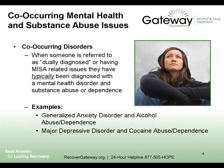Co-occurring disorders is when someone is referred to as dually diagnosed or having MESA-related issues — they have typically been diagnosed with a mental health disorder and a substance abuse or dependence. Common examples include generalized anxiety disorder and alcohol abuse or dependence, or major depressive disorder and cocaine abuse or dependence. For the purposes of this presentation, co-occurring disorders will refer to mental health and substance abuse issues.